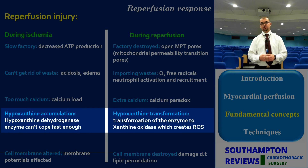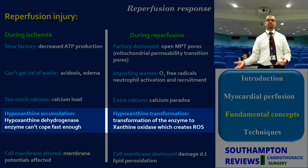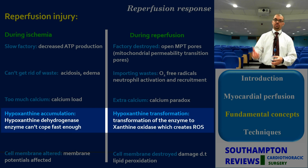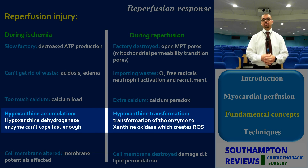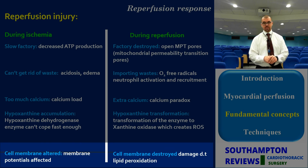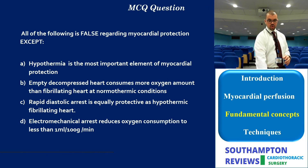One very important enzyme is xanthine dehydrogenase, which normally eliminates xanthine — a degradation product of ATP. This enzyme becomes slow during ischemia, but during reperfusion it is transformed into a completely different enzyme, xanthine oxidase, which actually produces endogenous oxygen free radicals and generates wastes from inside the cell. Additionally, the cell membrane is altered during ischemia and then damaged during reperfusion through lipid peroxidation.